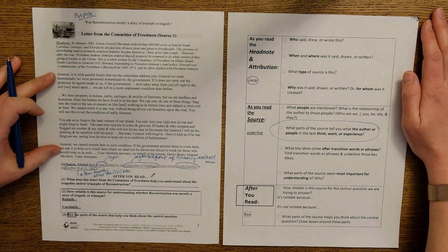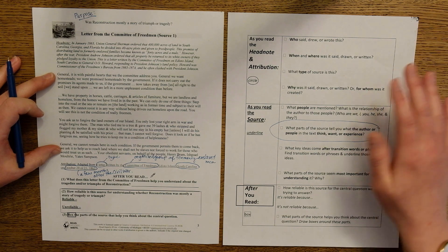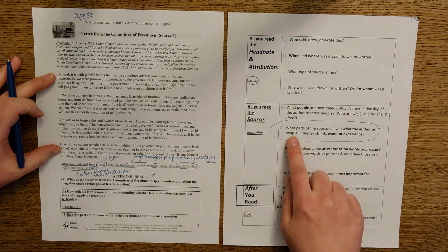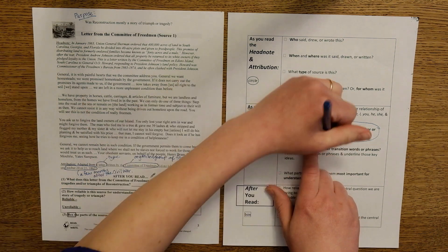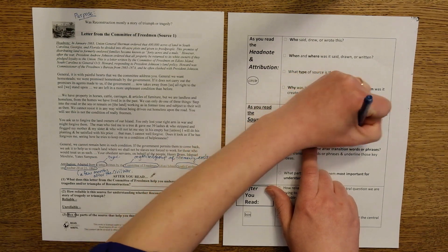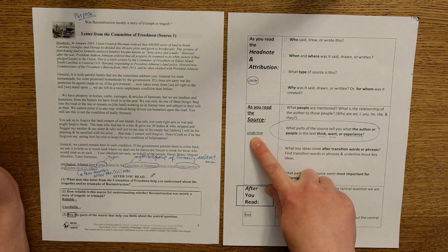Now it's time to read the source, or the actual letter that the Committee of Freedmen wrote. And while we read this source, we're just going to focus in on this second bullet point. What parts of the source tell you what the author or people in the text think, what they want, or what they experienced. When you find that information, we're going to underline it.